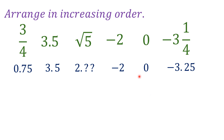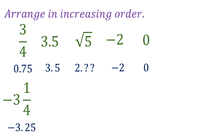Having all values in decimal form — including zero, which is just 0.0 — makes it easier to compare which is bigger and smaller. Since we're arranging in increasing order, we start with the smallest going to the biggest from left to right. The smallest numbers are the negative ones. Between the two negatives, the bigger number gives a smaller value, so negative 3.25 comes first, then negative 2, and then zero since the remaining numbers are positive.